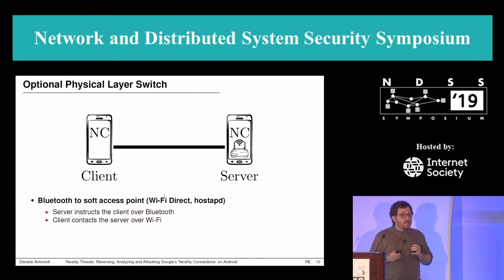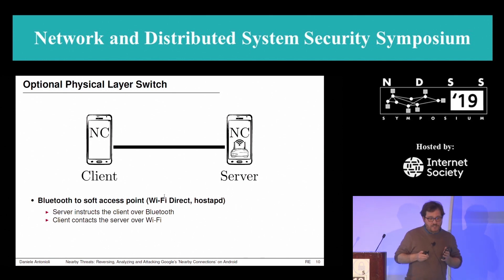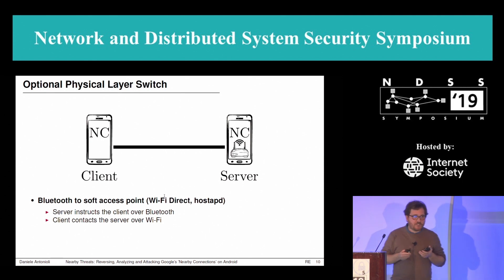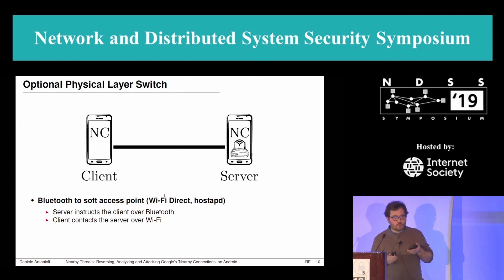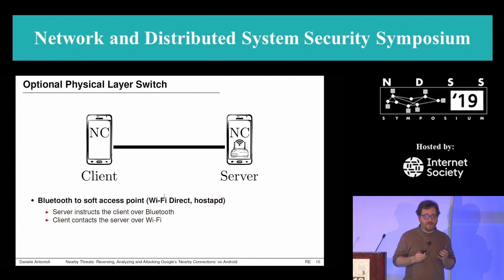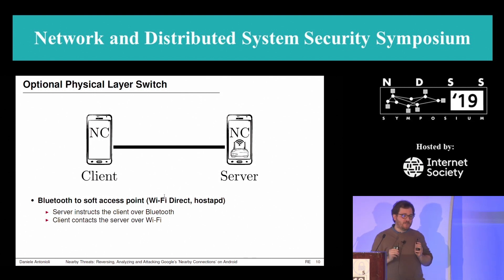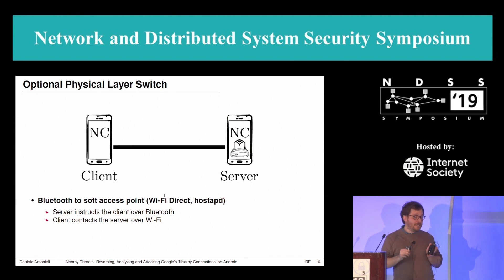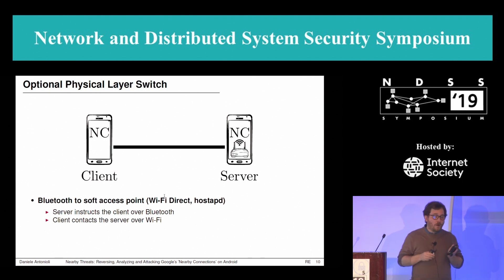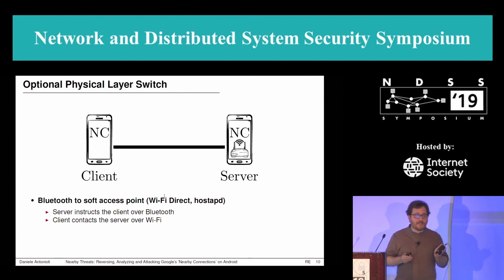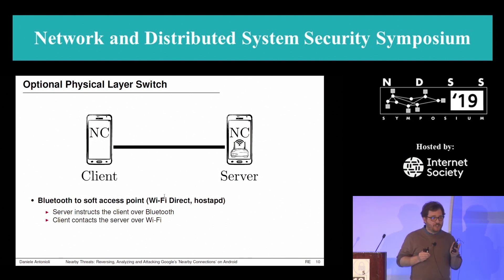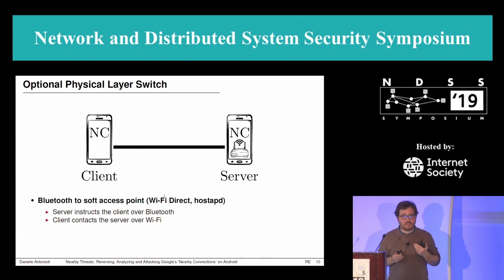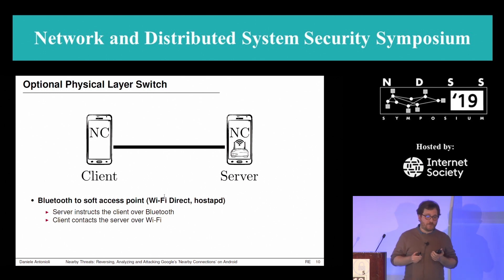Another very interesting phase we reversed is the optional physical layer switch. Basically, the server instructs the client over Bluetooth on how to switch to Wi-Fi. The problematic part — which in our opinion is not done right by Google — is that the client blindly follows the server's instruction and switches to Wi-Fi. In this example, the server acts as a soft access point, and the client receives information about it from the server and then happily connects to it.